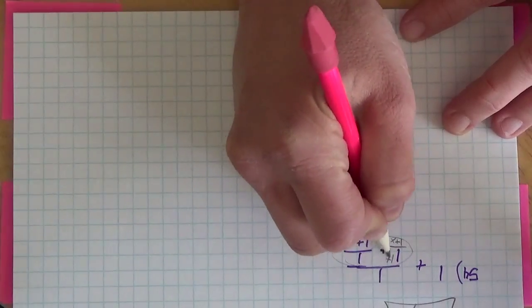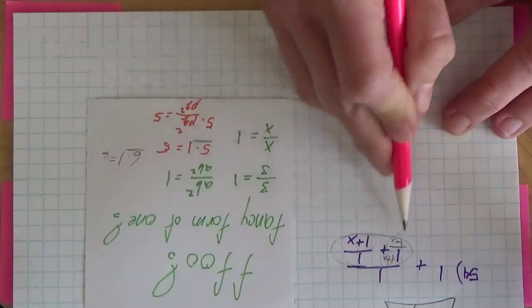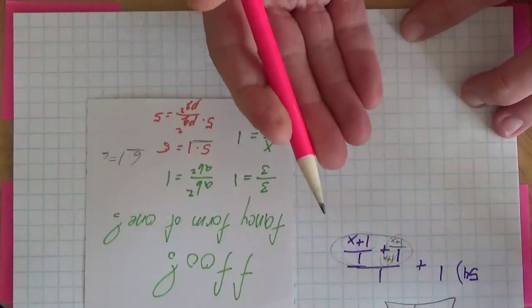He needs 1 plus x, so I need to multiply top and bottom by 1 plus x. That's a fancy form of 1. I'm multiplying 1 by 1. I'm not changing it.